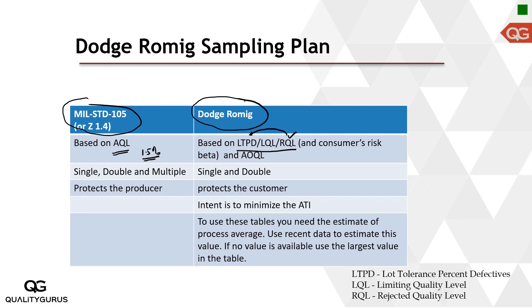The second set of tables is based on AOQL — average outgoing quality limit. We have learned about this in the theory part where we calculated average outgoing quality (AOQ), and the curve peaked at a maximum value. That maximum of the AOQ curve is the AOQL — the average quality level the receiver will receive on average.